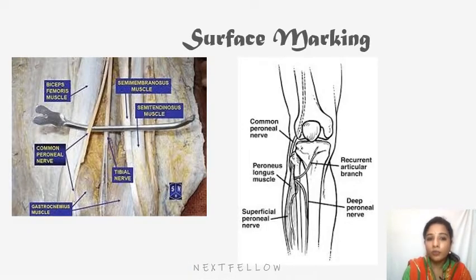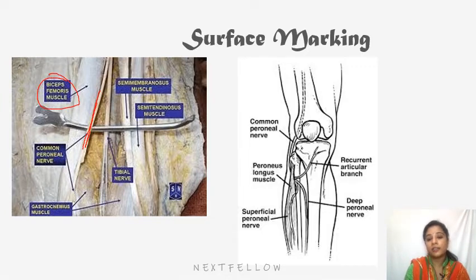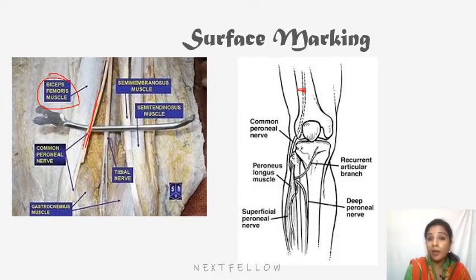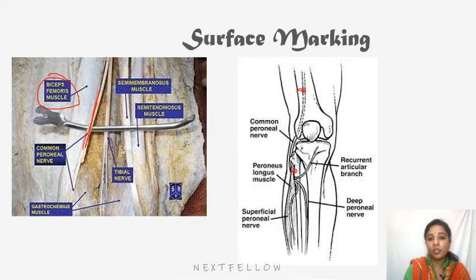Surface marking of the common peroneal nerve: here is a dissected image showing the common peroneal nerve lifted, present along the biceps femoris muscle on the lateral side of the popliteal fossa. The first point is at the upper end of the popliteal fossa — the upper angle — and the second point is at the back of the neck of the fibula. Joining these two points indicates the surface marking of the common peroneal nerve.